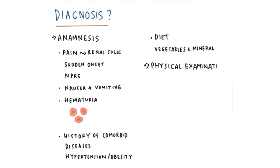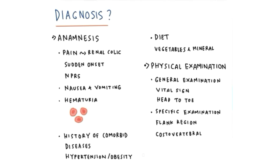We do physical examination including general examination. We examine the vital signs of patient. We examine the patient from head to toe. Then we do specific examination, especially in flank region. We usually find tenderness on costovertebral angle ipsilateral from affected kidney.